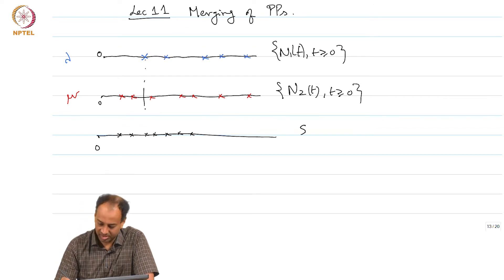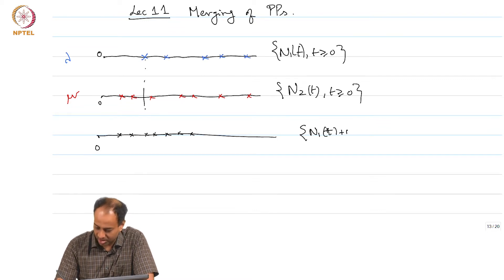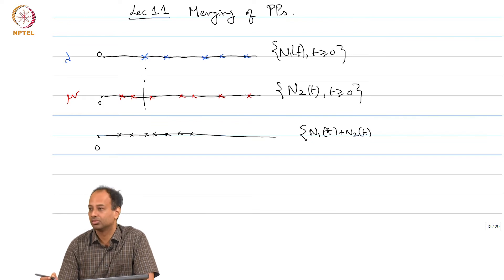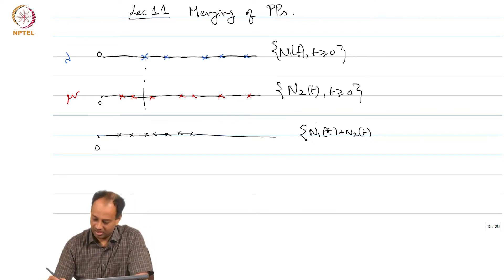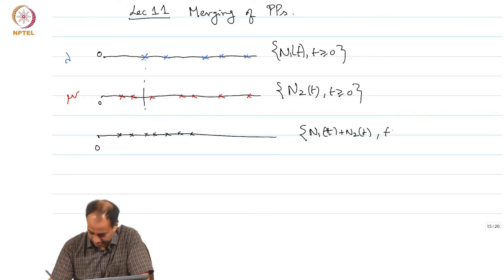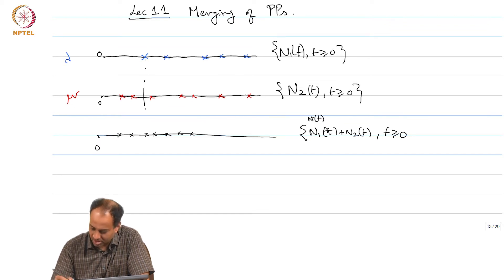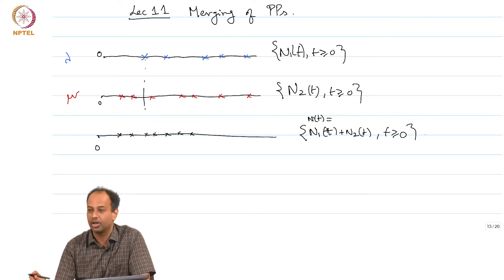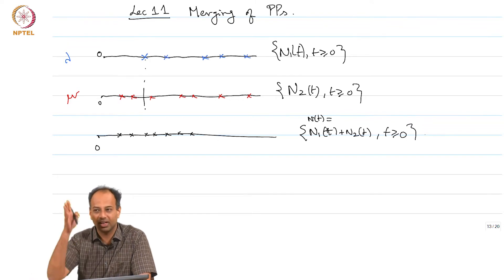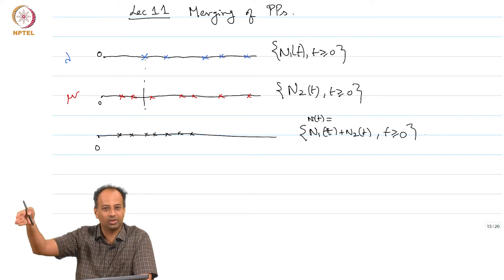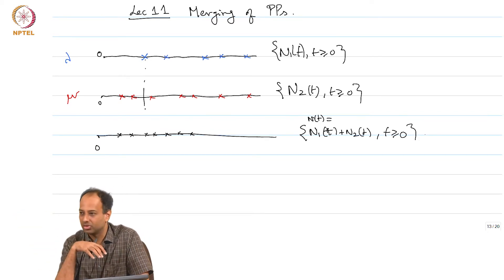The merged process is simply n(t) = n1(t) + n2(t). The new merge process n(t) is just n1(t) plus n2(t), so at any given time t the total number of arrivals is the sum of the number of arrivals in the 2 processes.